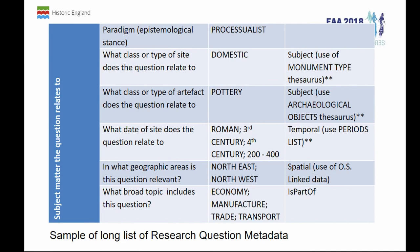Think about this as a database — this might be a list of the fields in the database. The sort of things you might want to record about a question: does it relate to particular dates and periods using period standards? Does it relate to the type of artefact or type of site, for which we have heritage data standards? There are some particular issues on spatial relevance which are very tough to crack, but lots of other people are thinking about it, as well as broad topics. We're very good in archaeology at indexing things we're very interested in, like monuments and artefacts, but not so good at indexing things of more general relevance such as disease or trade.